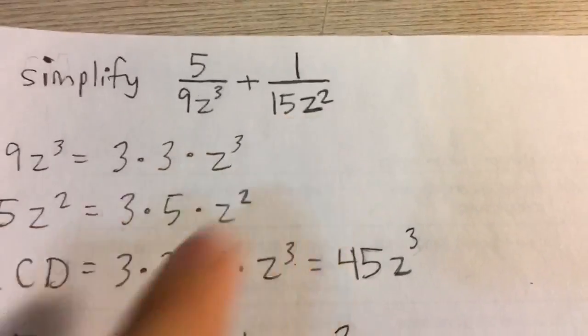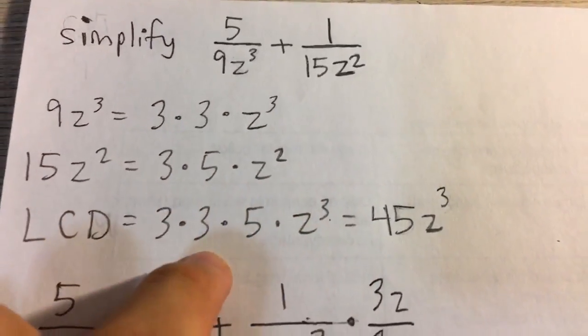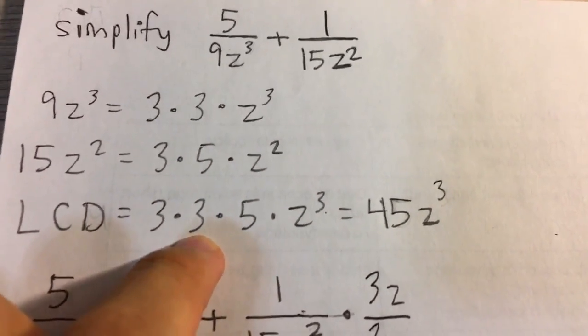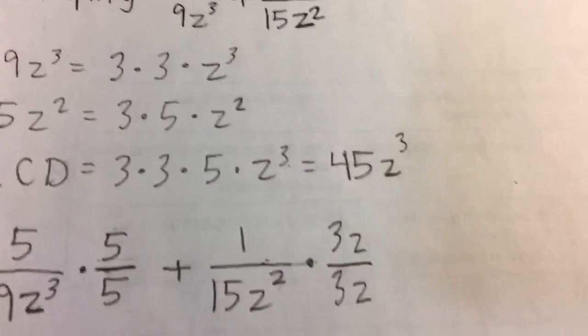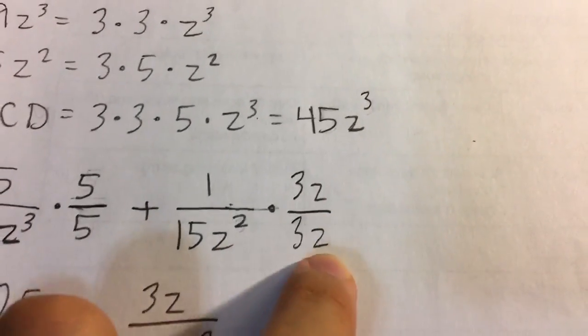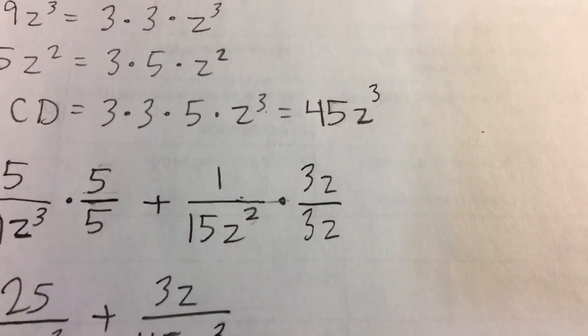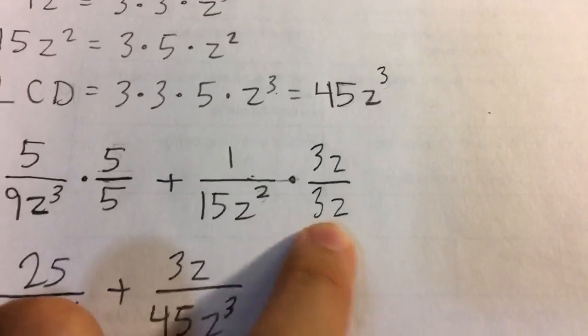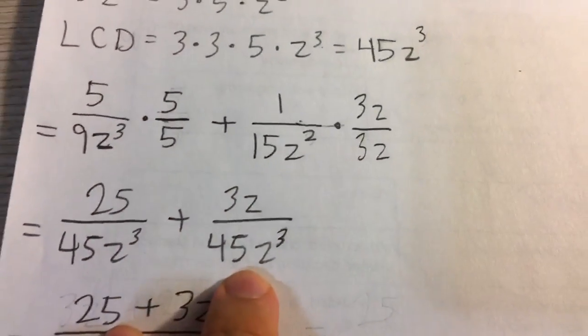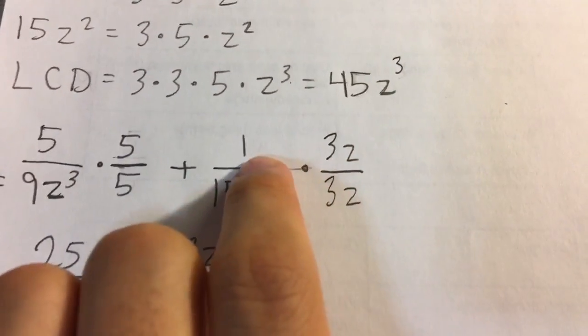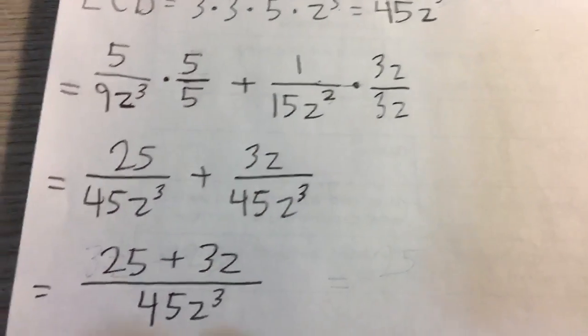Now for the second expression, notice what it's missing. It's missing a 3 and a z, so for the second fraction we're going to multiply numerator and denominator by 3z. Our denominator will be 45z cubed and our numerator will be 3z.